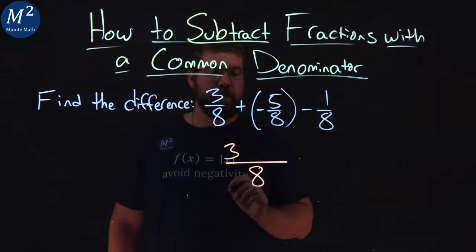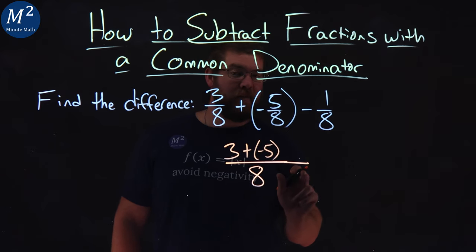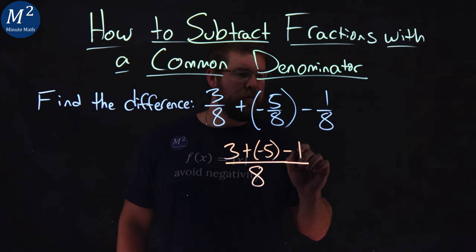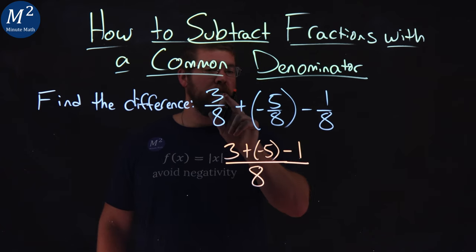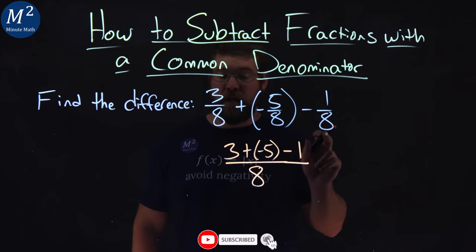3 comes down here, plus a negative 5, extend that fraction bar, minus 1. Again, look at the numerators: 3, negative 5, minus 1, all over 8. That's the common denominator.